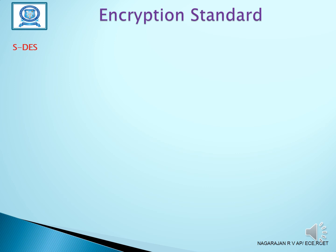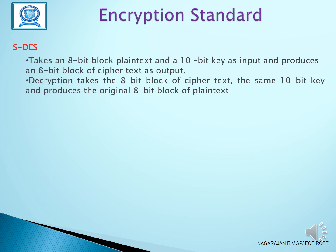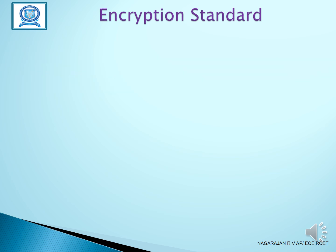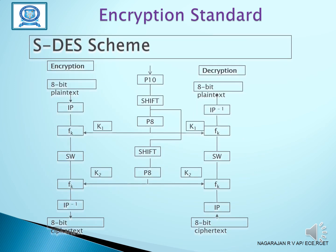Simplified DES takes an 8-bit block of plain text and a 10-bit key as input and produces an 8-bit block of cipher text. This is the SDES scheme. In the encryption stage, we have an 8-bit plain text input to IP (initial permutation), then SW (swap), then the function FK, then IP inverse, giving us 8-bit cipher text.